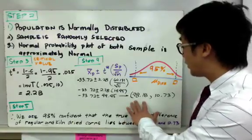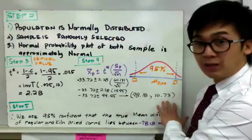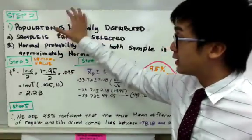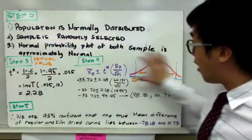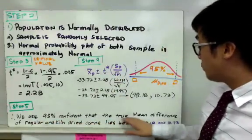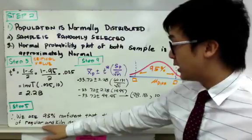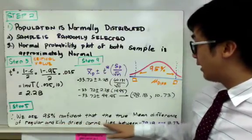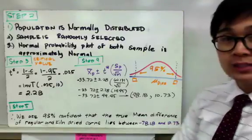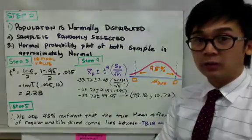So therefore, for step number 5, since all the conditions were satisfied and we did all our computation right here, we are 95% confident that the true mean difference of regular and kiln-dried corns lies between negative 78.18 and 10.73 pounds per acre.